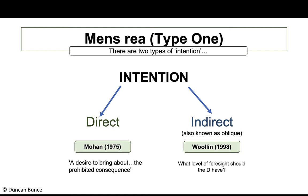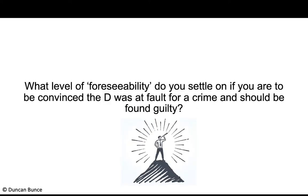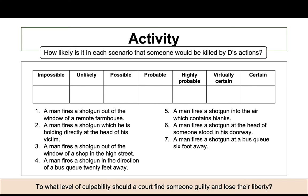If the foresight standard is too high, there may be very few prosecutions at all. This is one of the key issues: what level of foreseeability should the court accept when dealing with cases of oblique intent — where we are finding the defendant at fault and to blame for the crime?